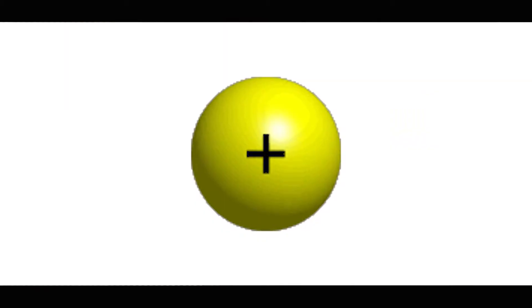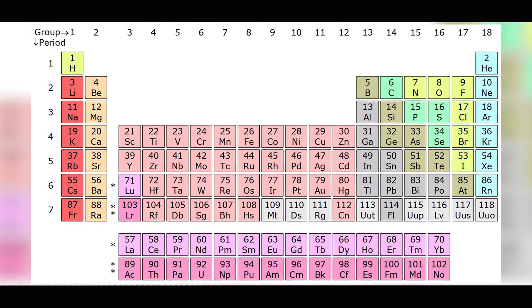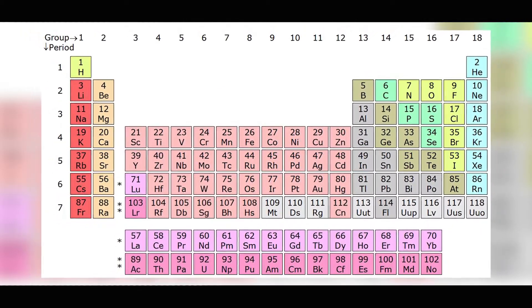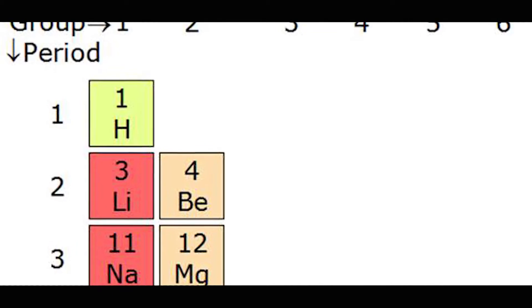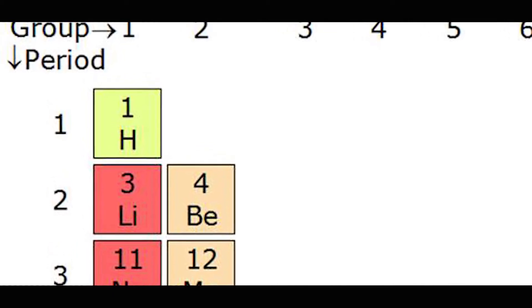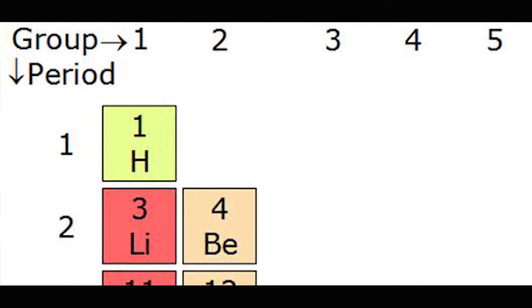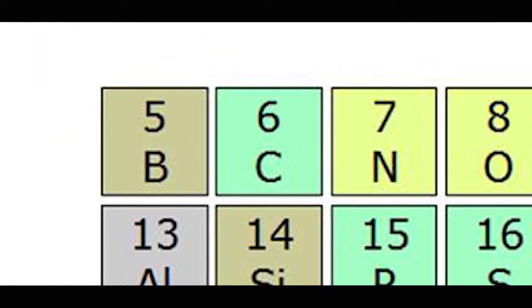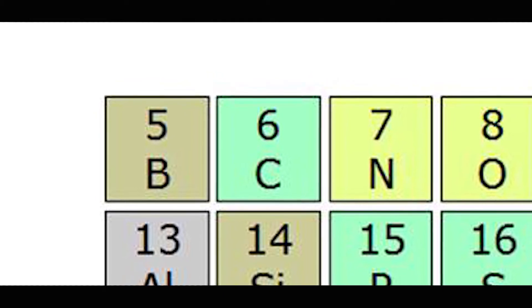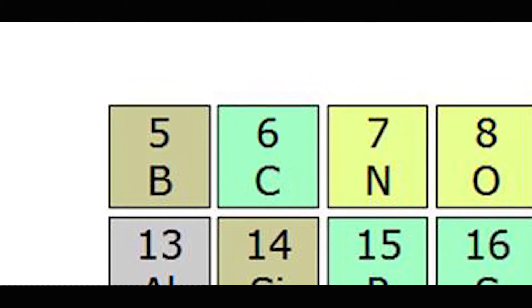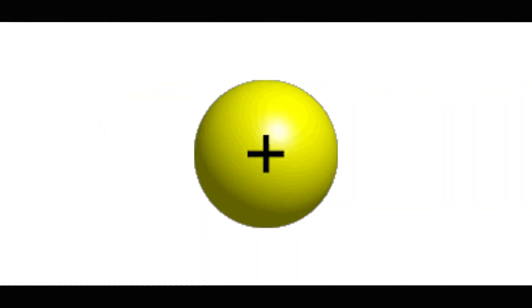The very first one is called a proton. Now all the elements on the periodic table are defined by the number of protons in them. For instance, hydrogen which has a one above it on the periodic table of elements would have exactly one proton, and carbon which has a six above it has exactly six protons. This is a steadfast rule.